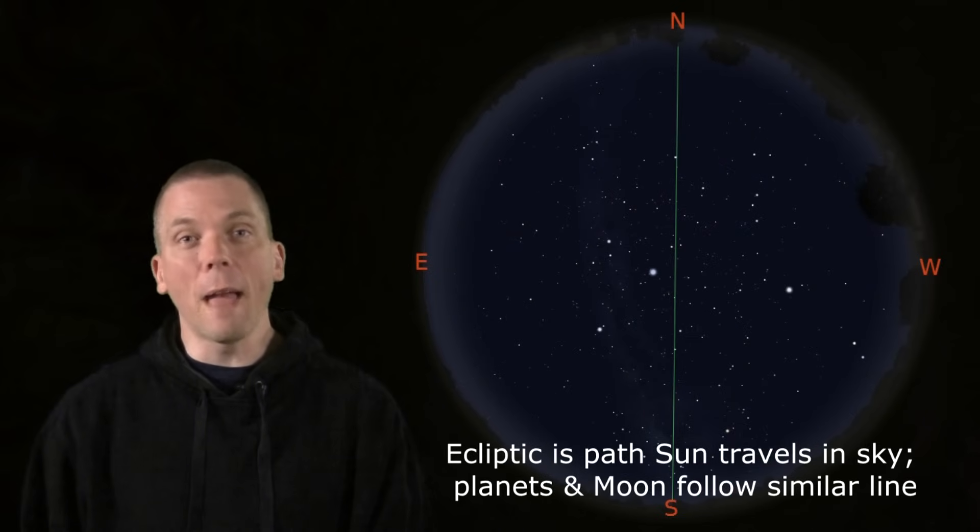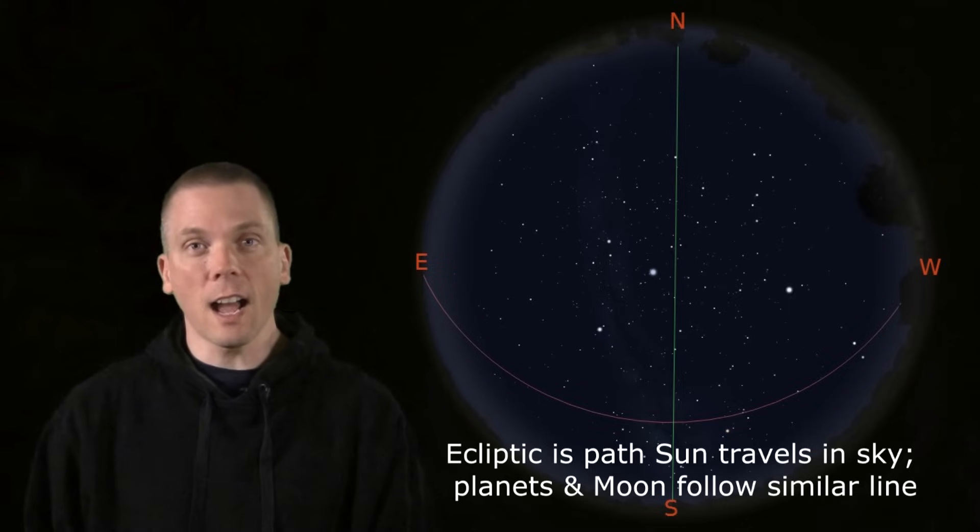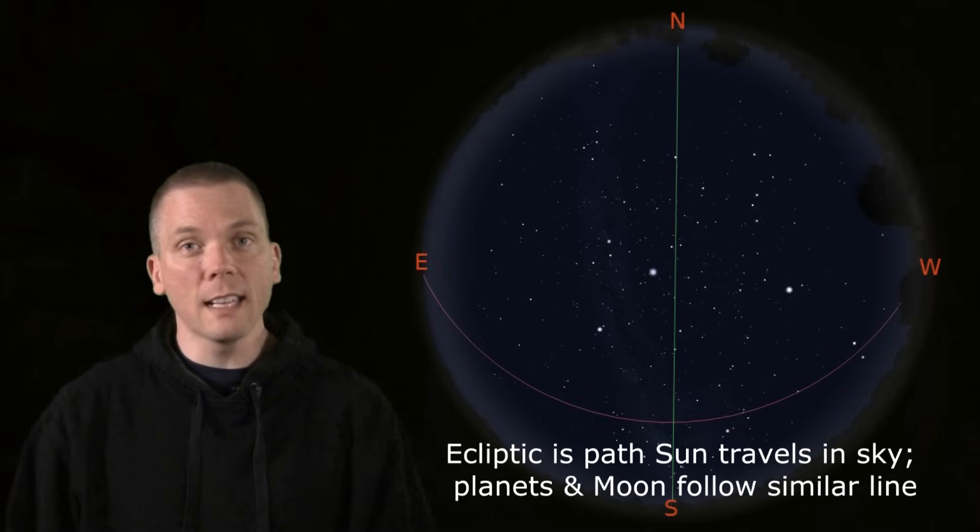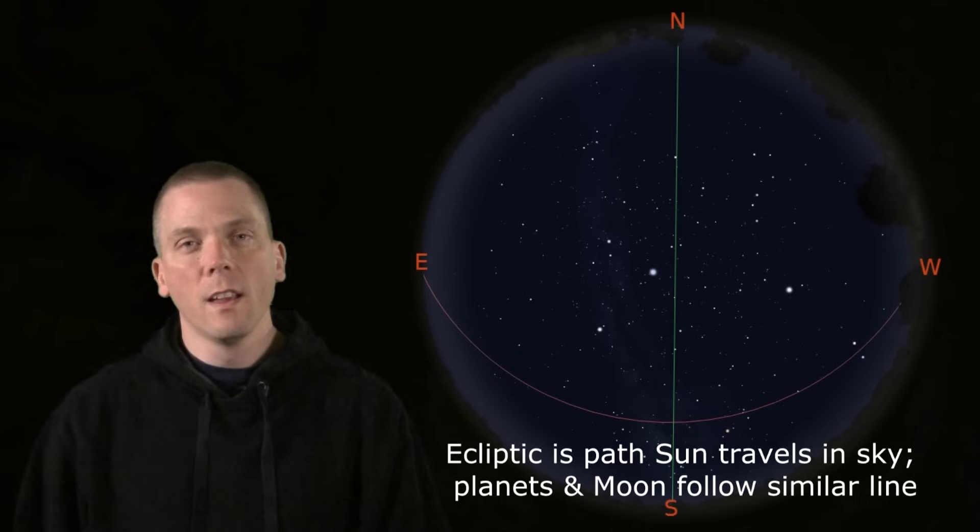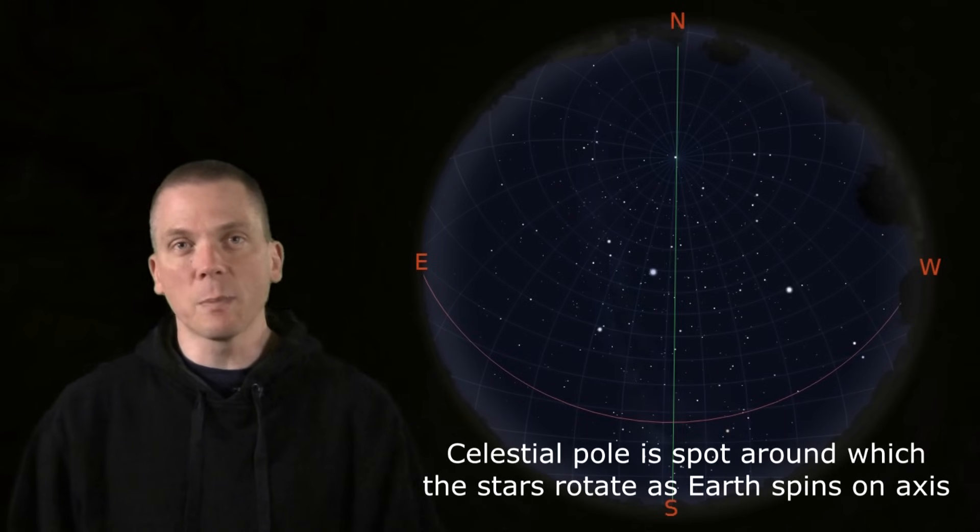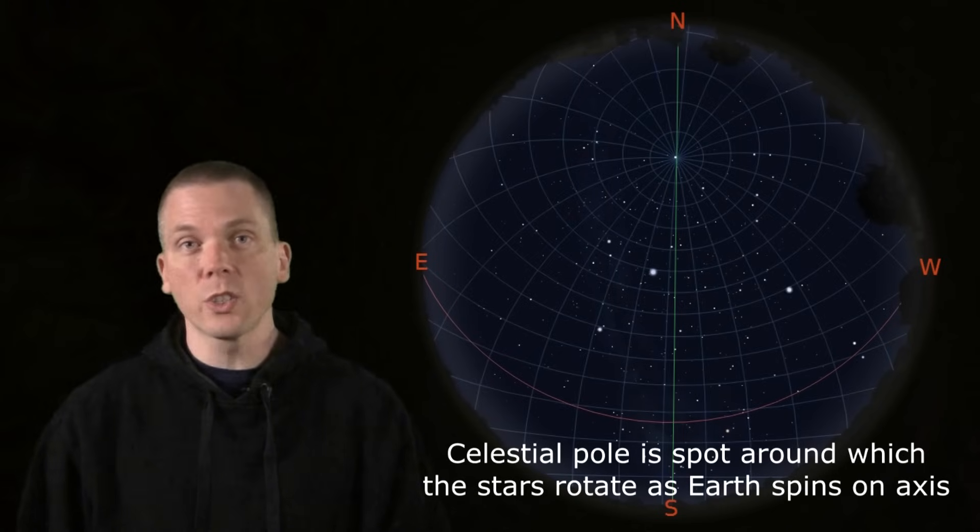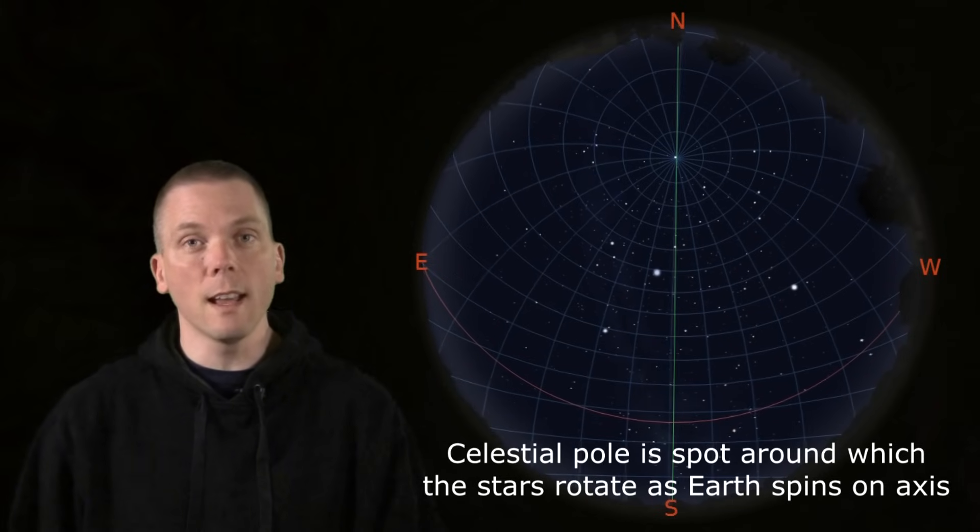The ecliptic is the path the sun takes in the sky, along which the planets largely appear to follow. The celestial pole is the spot in the sky around which the stars appear to rotate as the Earth spins.